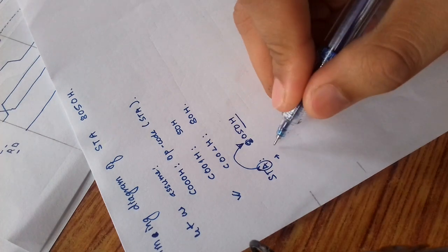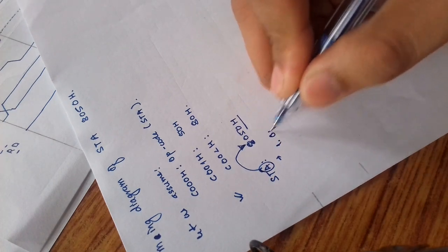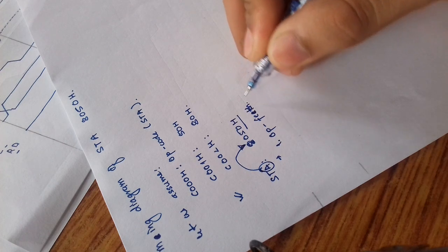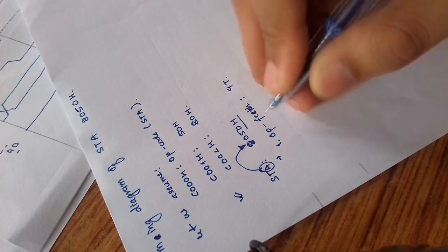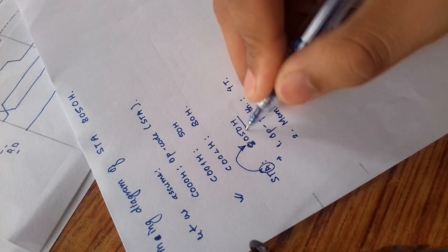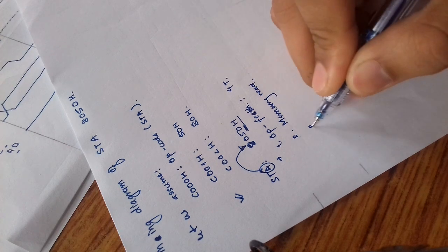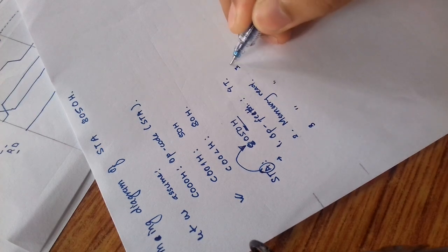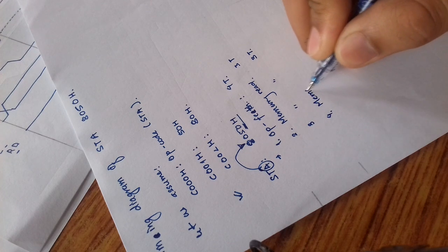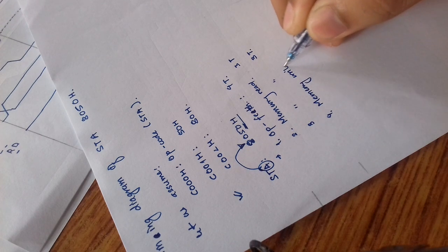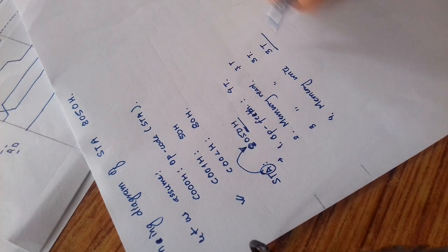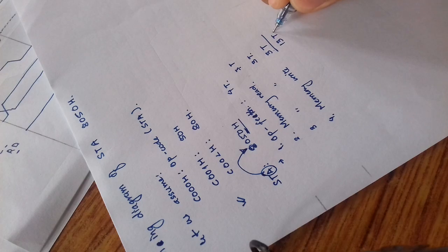There are different machine cycles: the first cycle is the operation code fetch cycle, which takes 4 clock periods. Then we have a memory read that reads the opcode. The next memory read also takes 3T clock cycles, and then we have a memory write where we write the content of the accumulator. This gives a total of 13 clock periods.